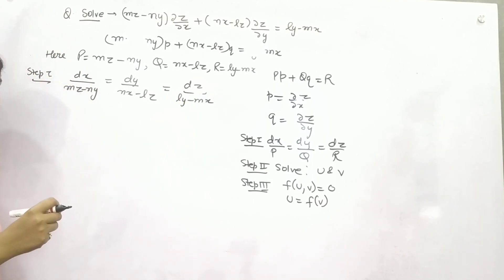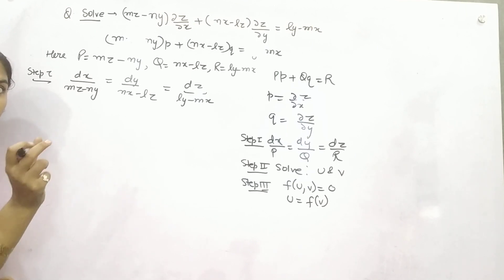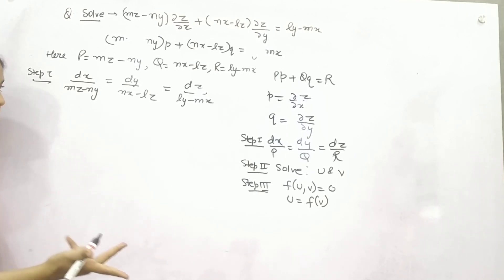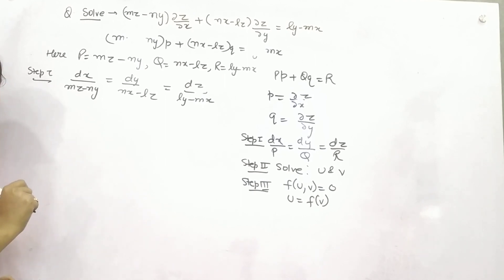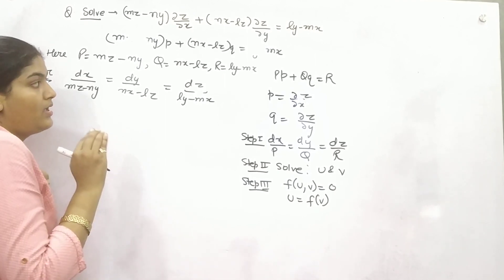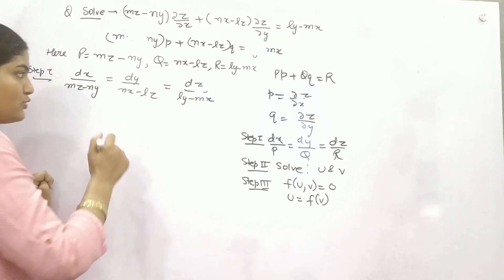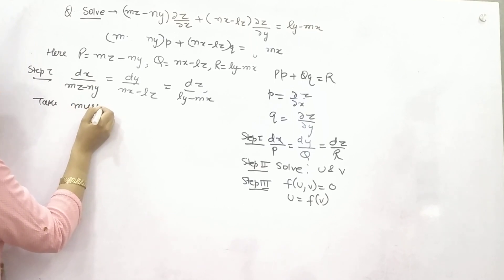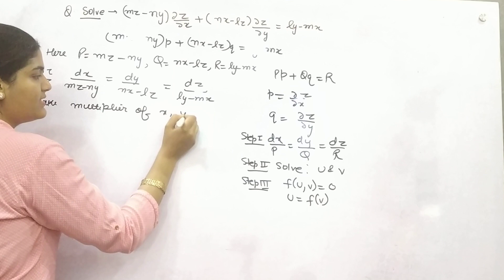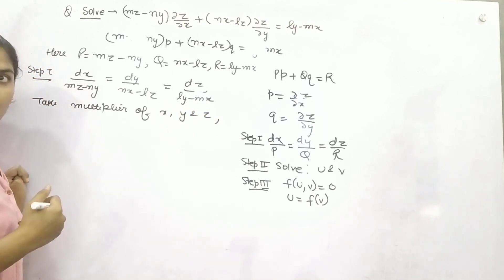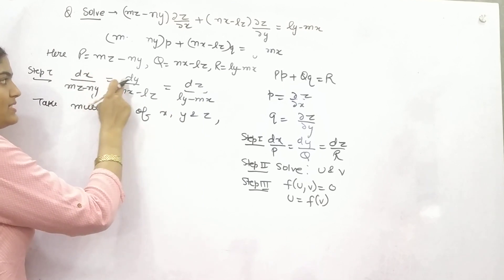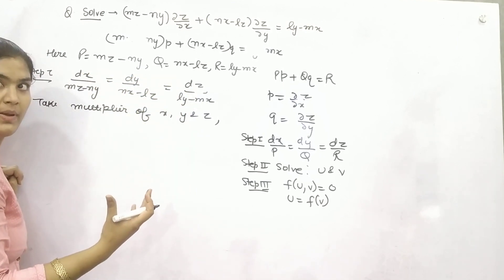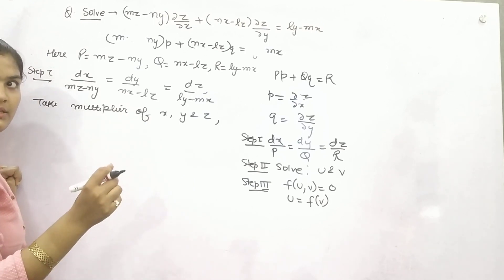Now you can see that even if you consider the first and second fraction and equate them, you will not be able to get a function. You will not be able to cancel anything. So in that case, what can you do? In that case you can use the multipliers concept. Take multipliers of X, Y, and Z - the same multipliers simultaneously.